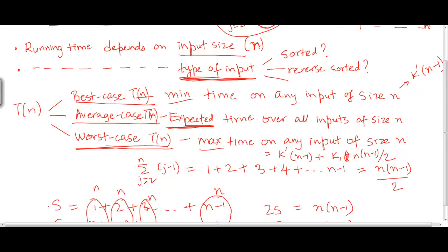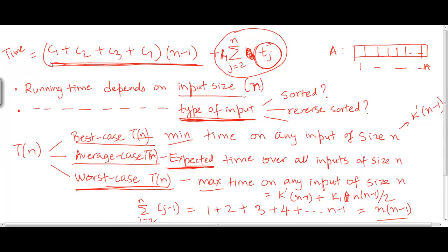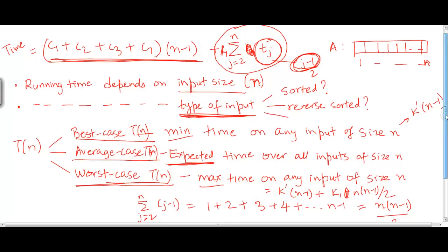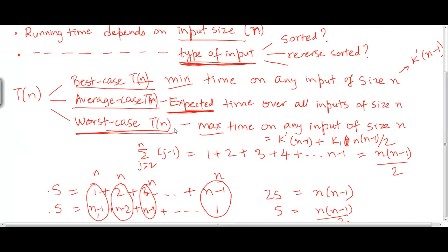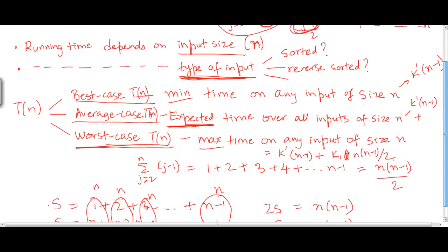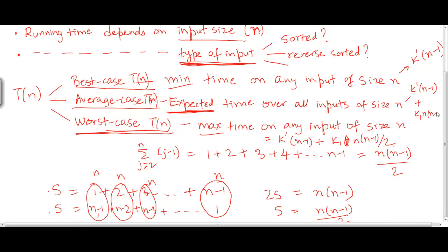So the average case running time is going to be the constant expression plus k1 times the sum of the series where t_j is now (j-1)/2. Since we already calculated this series in the worst case where t_j was j minus 1, we just take half of that. So the average case running time is k'(n-1) plus k1 times n(n-1)/2 divided by 2, giving k1·n(n-1)/4 plus k'(n-1).